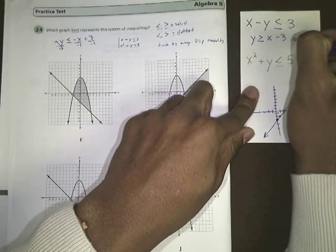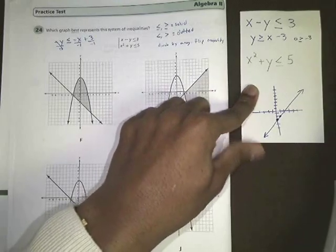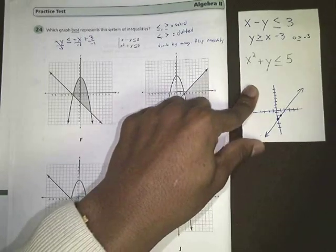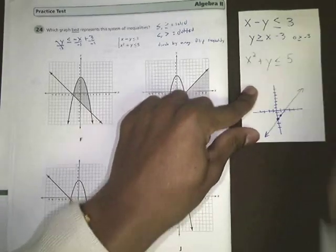Is 0 greater than or equal to negative 3? Yes, that's true. You'd rather have no money than owing me $3. I'd take the $3, but I'd rather have no money.